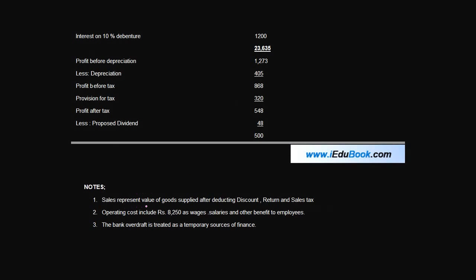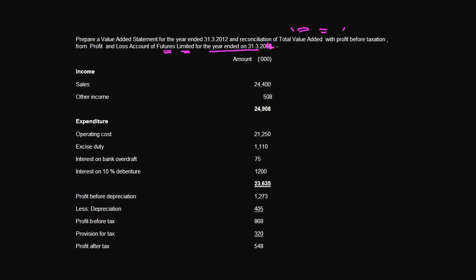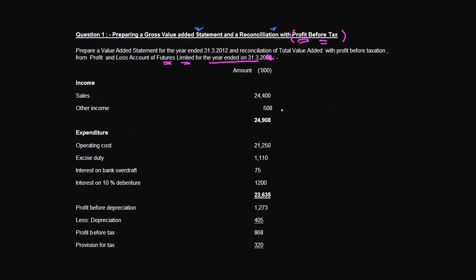The Notes state Sales represent Value of Goods Supplied after Deducting Discount, Returns and Sales Tax. Operating Cost includes 8250 as Wages and Salaries and Other Benefits to the Employees. The Bank Overdraft is Treated as Temporary Source of Finance. Just to recall, if you haven't had a chance to go through the previous two videos, you can go through them where we explained the concept of Gross Value Added Statement.